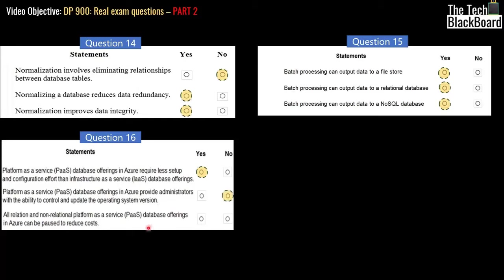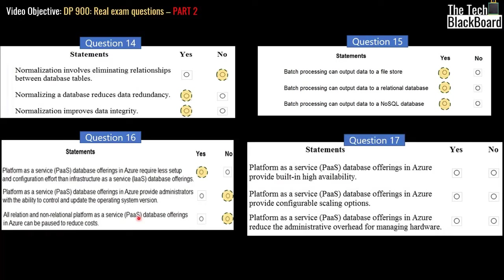Third statement for question sixteen: all relational and non-relational PaaS database offerings in Azure can be paused to reduce cost. In IaaS you can stop a virtual machine to reduce cost, but in PaaS you cannot pause all services. The key word is 'all' — you cannot pause all of them. So this statement is no.